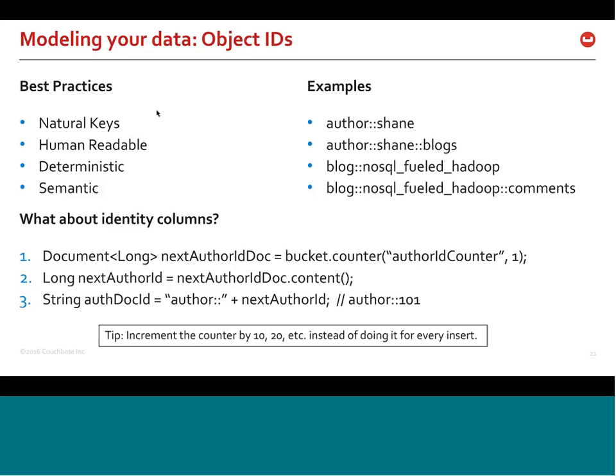There is a tradeoff, though. The larger the key, the fewer keys you'll be able to fit in the database cache in memory. If you make huge keys that are 128 bytes long, that will work, but you'll fit fewer object IDs in memory. So there's a balance between making keys human-readable and parsable versus making them so verbose that you consume more memory than you want in storing those keys.